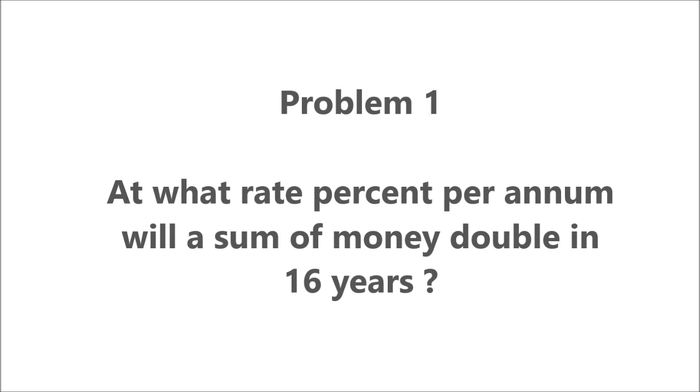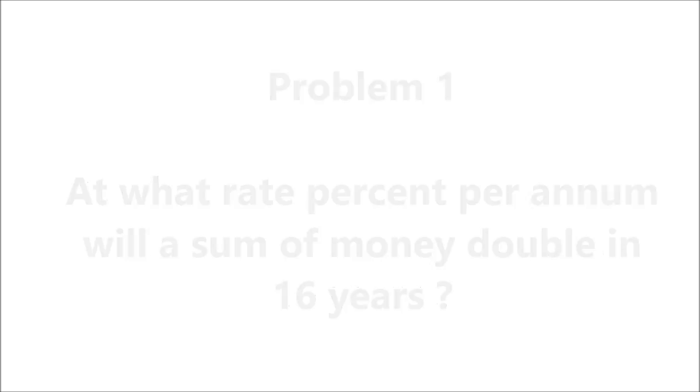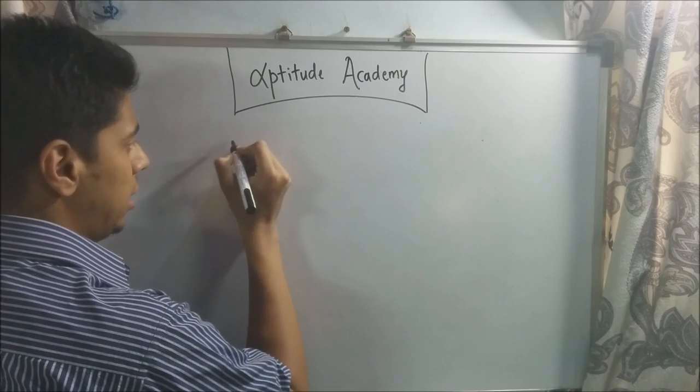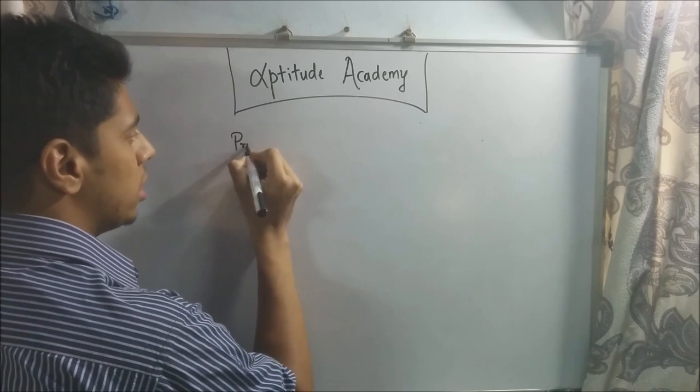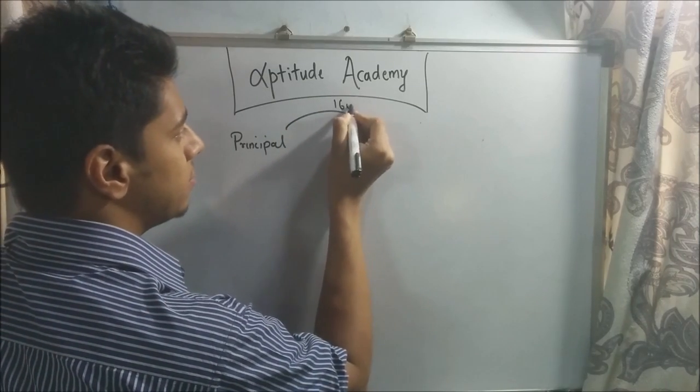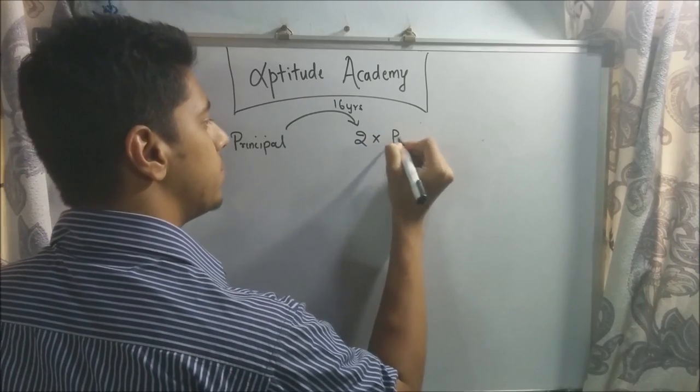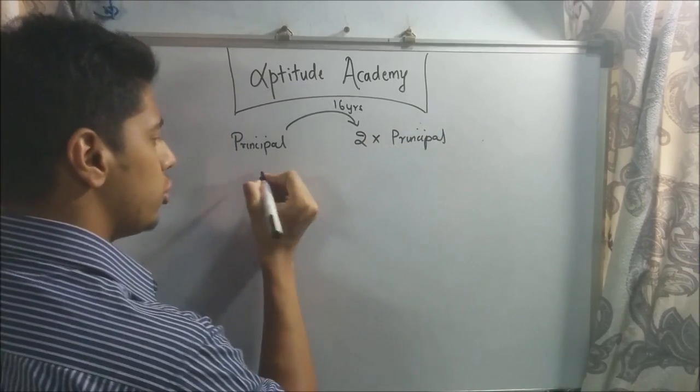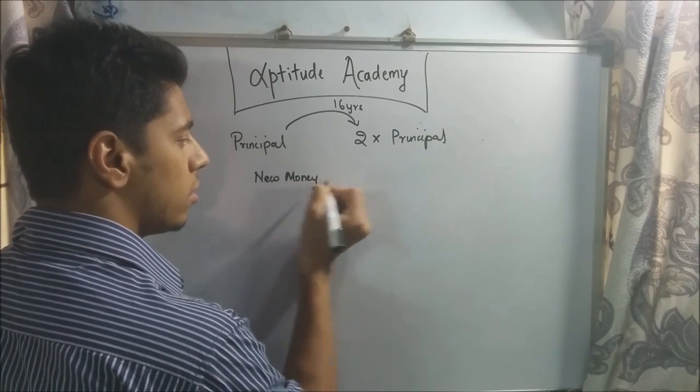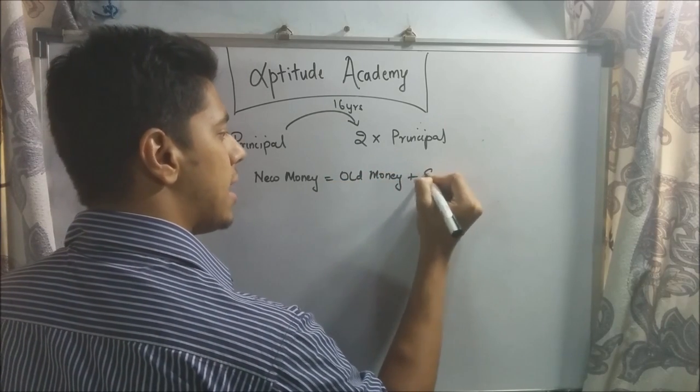Problem 1: At what rate percent per annum will a sum of money double in 16 years? For the first sum, they've asked you at what rate will an amount of money, your principal amount, will double after 16 years. It should become 2 times principal. So your new money is equal to old money plus SI.